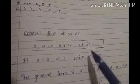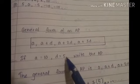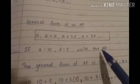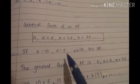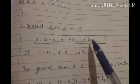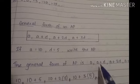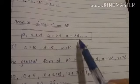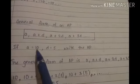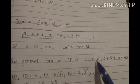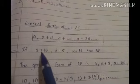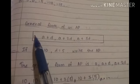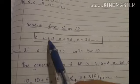Let's take an example. If a = 10 and d = 5, write the AP. Using the general form — a, a+d, a+2d, a+3d — we substitute a = 10 and d = 5 into this formula to get the AP.